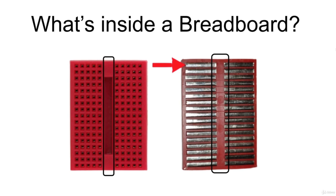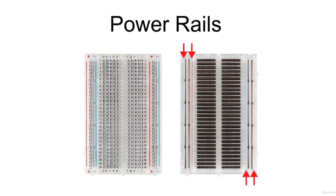For each side of the same row, you can connect a maximum of five component leads. Aside from horizontal rows, breadboards usually have what are called power rails that run vertically along the sides. These special rails are used to distribute the power supply voltages of the circuit along the entire breadboard. These power rails give you easy access to power wherever you need it in your circuit.